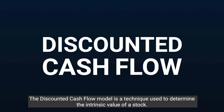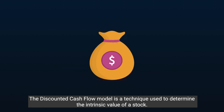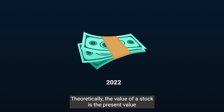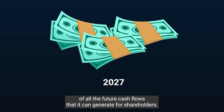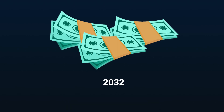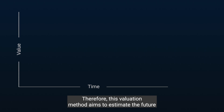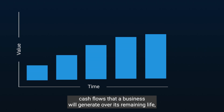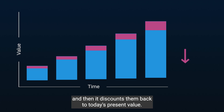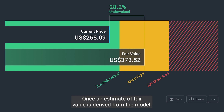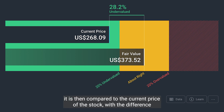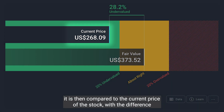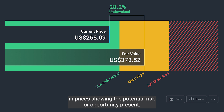The discounted cash flow model is a technique used to determine the intrinsic value of a stock. Theoretically, the value of a stock is the present value of all the future cash flows it can generate for shareholders. This valuation method aims to estimate the future cash flows a business will generate over its remaining life, then discounts them back to today's present value. Once an estimate of fair value is derived, it is compared to the current price of the stock, with the difference showing the potential risk or opportunity.